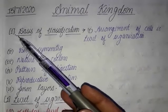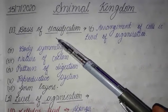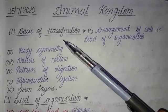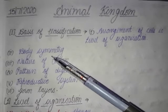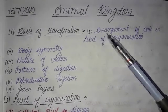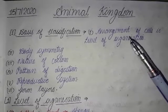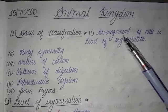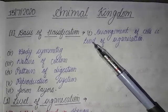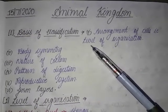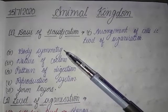The first topic is the basis of classification. Basis means the main characteristics — which characteristics are used for classification. First of all, the first basis is the arrangement of the cells: are cells freely arranged, or is there tissue formation, organ formation, or organ system formation? This type of arrangement is called the level of organization — cell level, tissue level, organ, or organ system. The second basis is body symmetry.